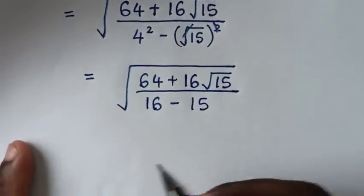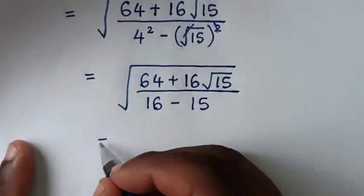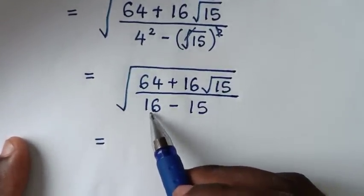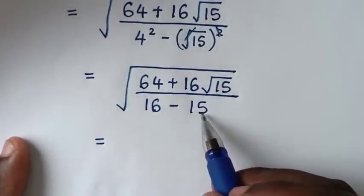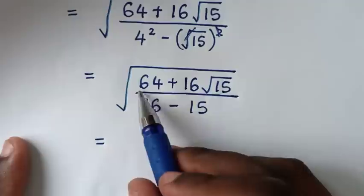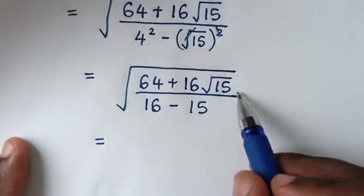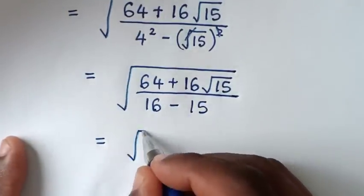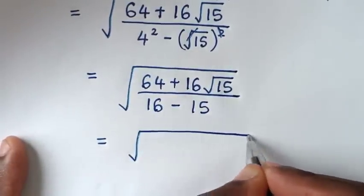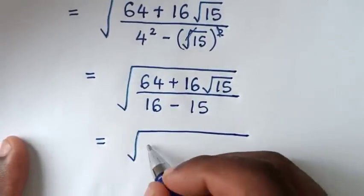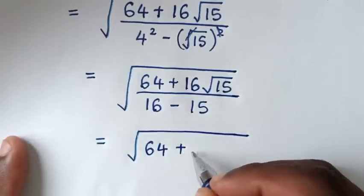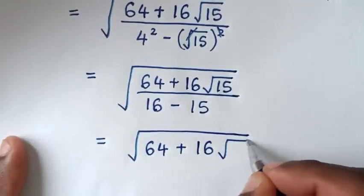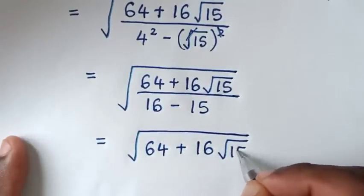Then it will be equal to — from here in the denominator, 16 minus 15 is 1, so this numerator divided by 1 is still this numerator. So here it will be square root of 64 plus 16 square root of 15.